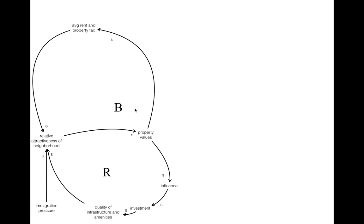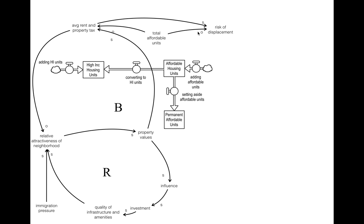Here are some of the other effects that rise out of these two interacting feedback loops. As the average rent and property tax increase, all else being equal, there's a higher risk of displacement. If the total number of affordable units can increase, that's going to mitigate that risk and tend to reduce it. The interplay between the different types of housing in a neighborhood is going to influence that amount of affordable units. We're showing three stocks of housing: high-end or expensive housing, affordable units, and units that are made permanently affordable through something like a land trust or some other legal mechanism. As the amount of affordable housing goes up through these interactions, the total amount of affordable units increases and the risk of displacement decreases.